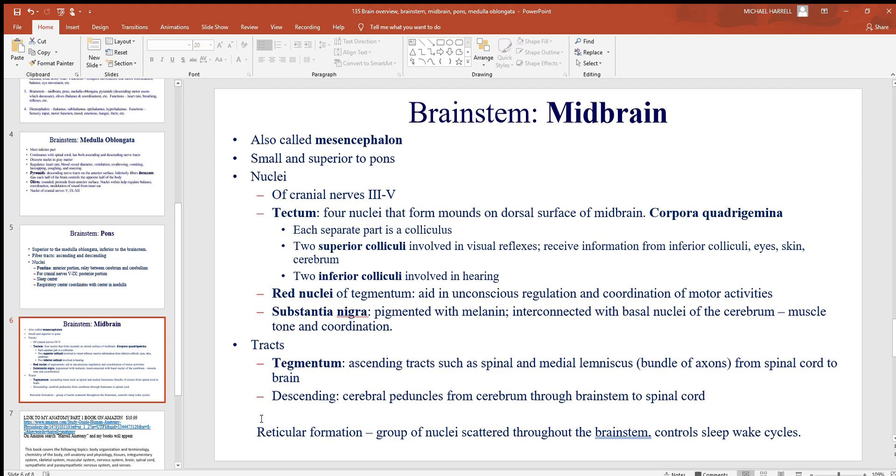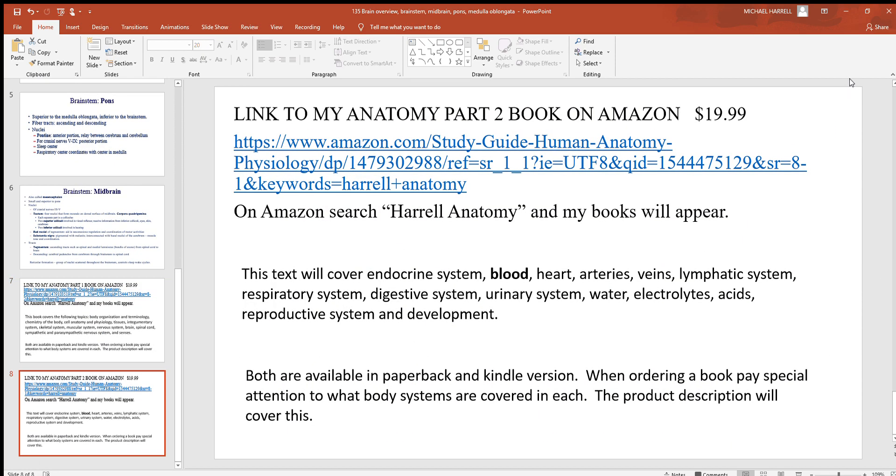And there's also lots of descending tracts, some of these from the cerebrum going down through brain stem to the spinal cord. And there's also this reticular formation, group of nuclei scattered all around the brain stem which have a lot to do with your sleep-wake cycles.